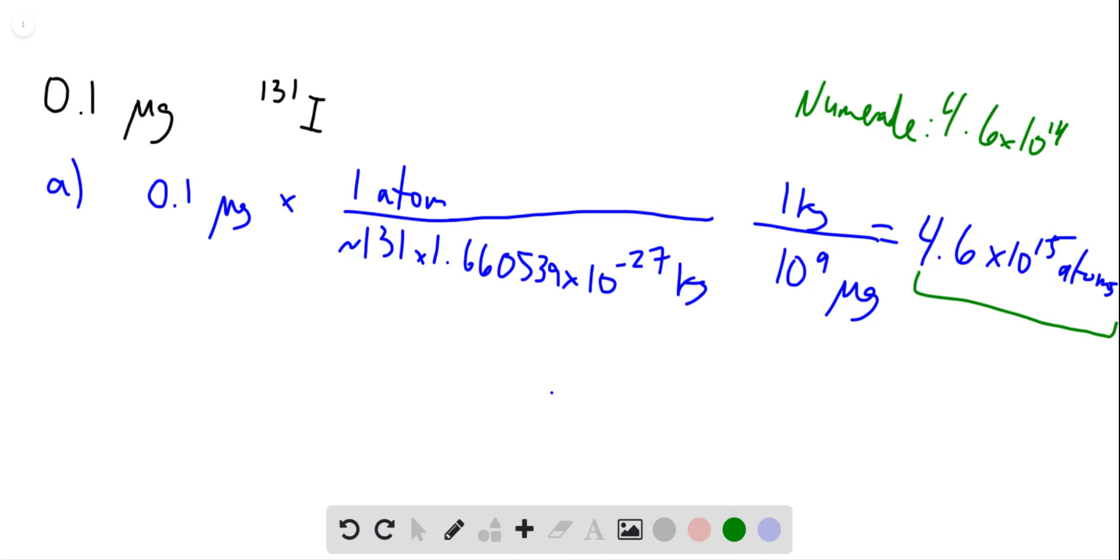We can use both answers to keep going forward. In part B, we have to determine the activity of the material. So the activity A is equal to minus lambda times the number of atoms N.